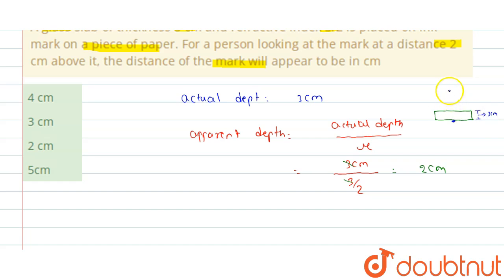And the person's eye is looking at above, 2 cm above. Now students, the person will see this depth as 2 cm, not 3 cm, due to the apparent depth concept.